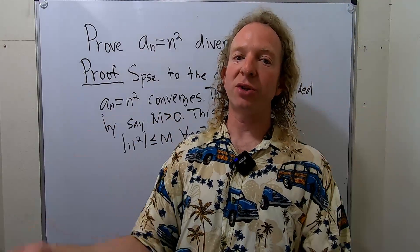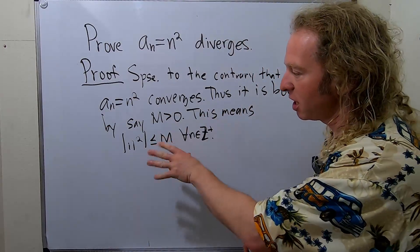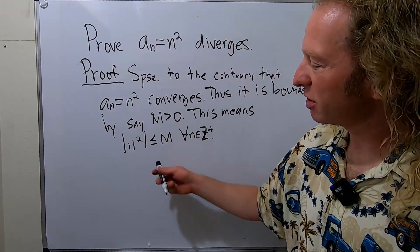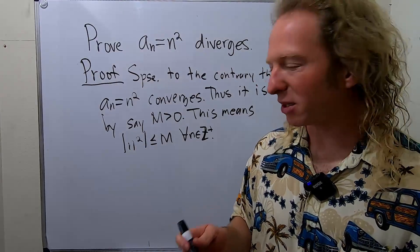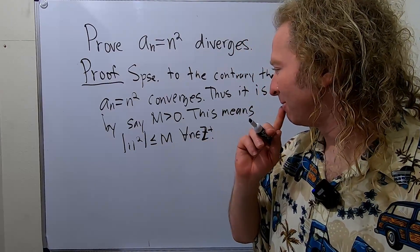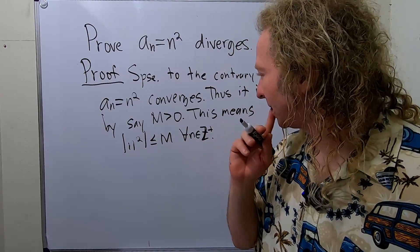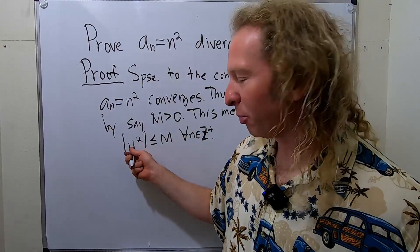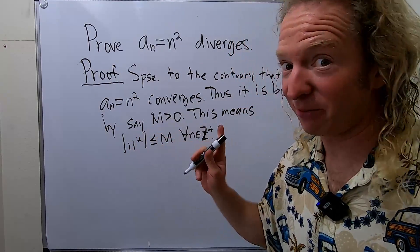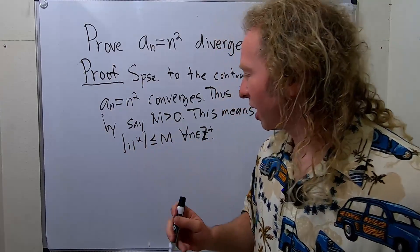We're trying to reach a contradiction, so we have to strategically pick an n that will make things work. This is squared, so in order to make things clean, I'm thinking we can try something. I want to plug something in here.